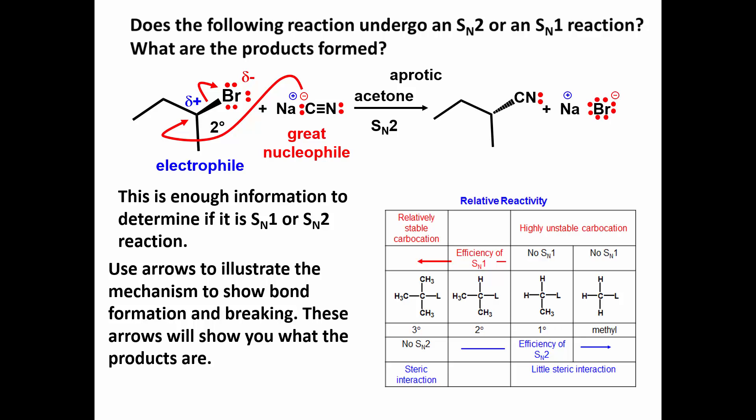After drawing your arrows, you know what your products are. But don't forget stereochemistry. The starting material has an S configuration. Since an SN2 reaction occurs from the backside of the carbon-leaving group sigma bond, inversion occurs at the stereogenic carbon to produce the R product.